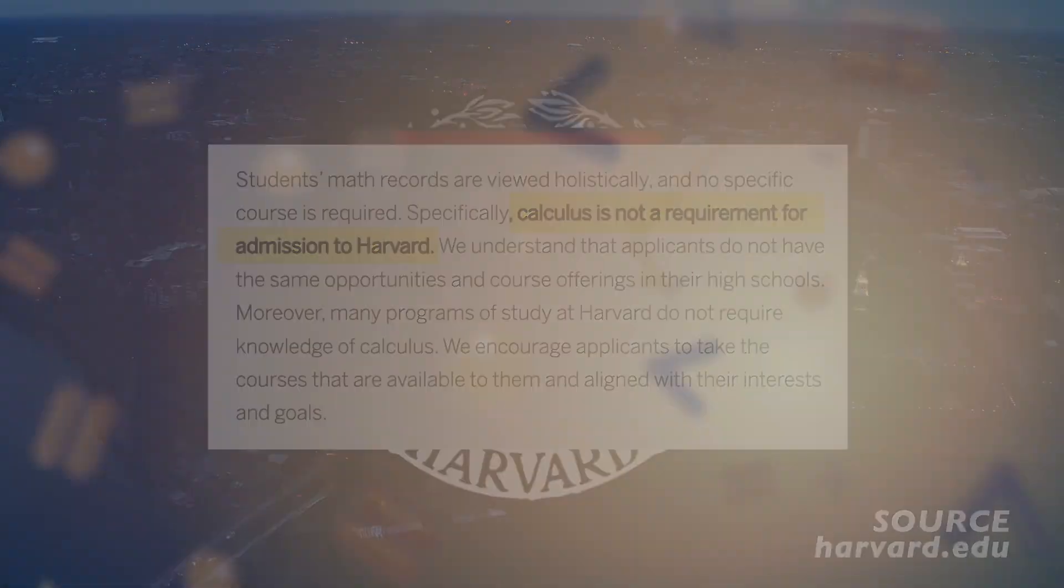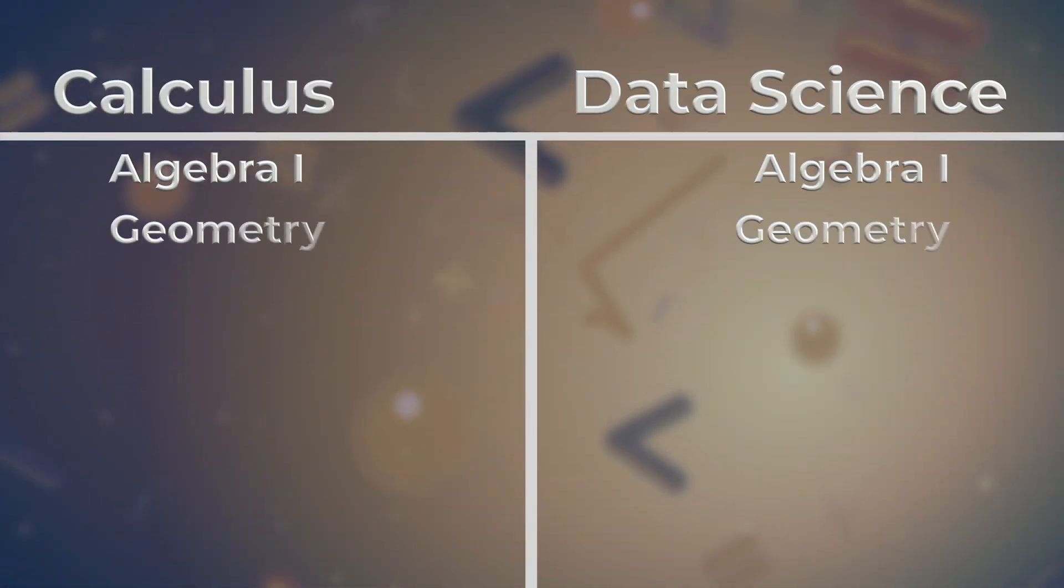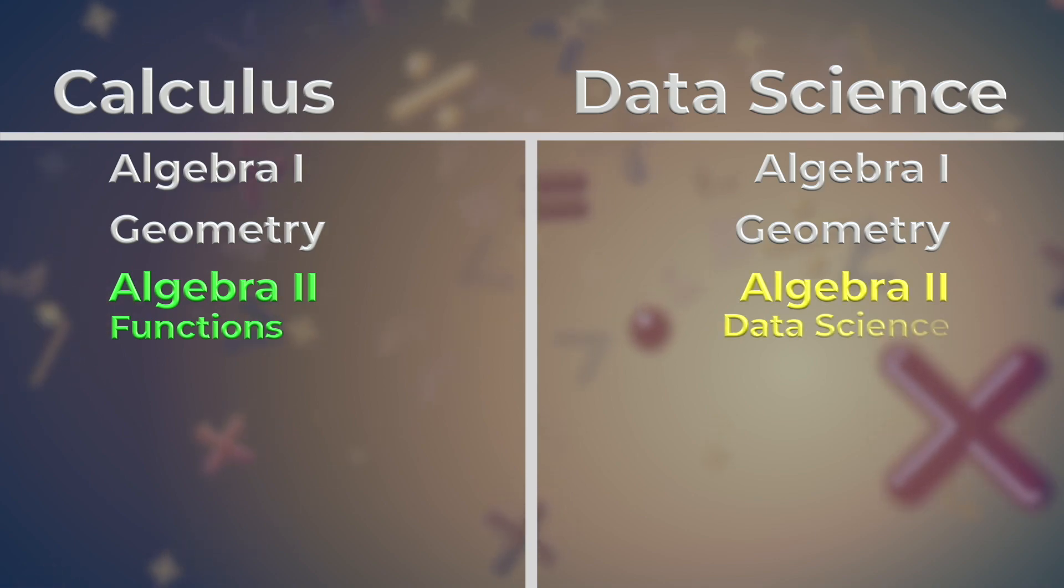All district students will start with Algebra 1 and Geometry. Students are able to choose between the two different pathways starting with their Algebra 2 course. Students interested in the calculus pathway should take Algebra 2 functions. Or, if a student wants to continue with the data science pathway, they will take Algebra 2 data science.